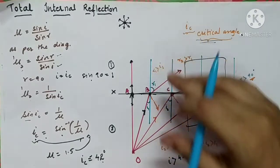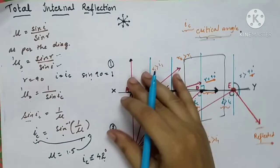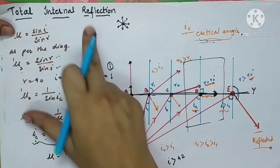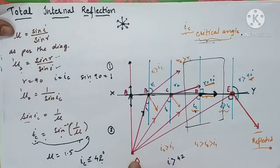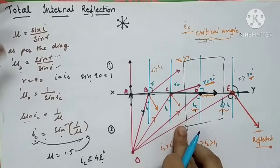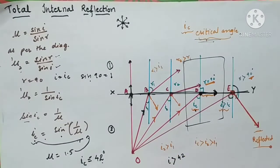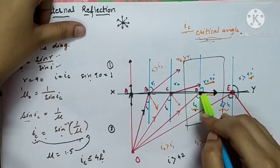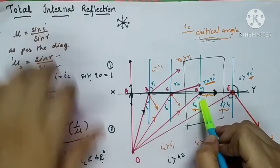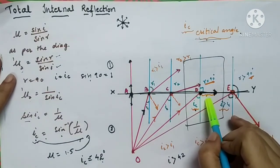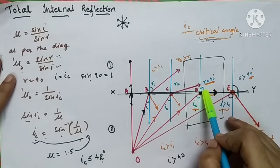As-salamu alaykum dear students, let's continue the topic optics. In the last lecture we covered total internal reflection. The concept was: when a source of light is placed in a denser medium and various rays of light are incident on the surface of that denser medium, whenever a ray is incident at the critical angle, the refracted ray will come along the surface of the denser medium, meaning the angle of refraction will be 90 degrees.